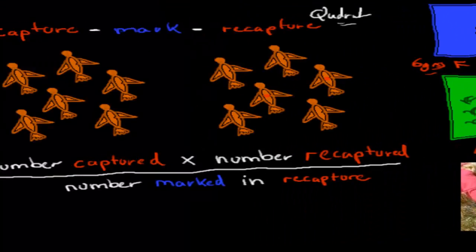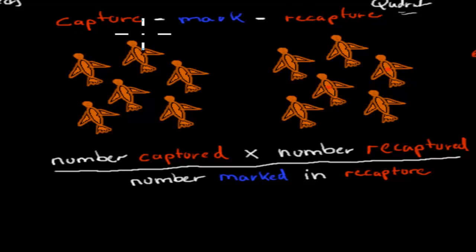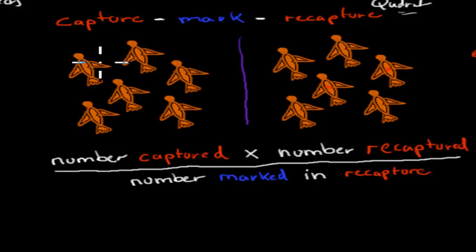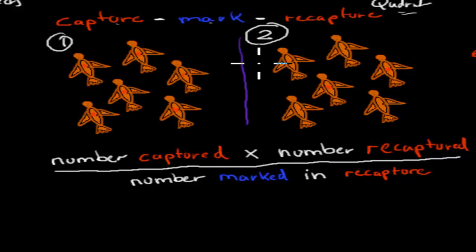The next technique is capture, mark, and recapture. First, we capture six birds and give them all a mark. That's step one — we capture six birds, mark them, and then release them again.